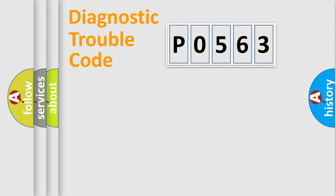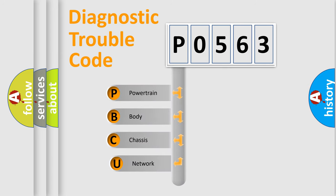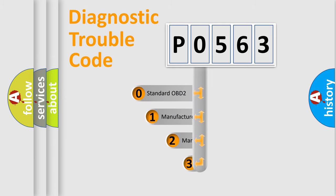First, let's look at the history of diagnostic fault code composition according to the OBD2 protocol, which is unified for all automakers since 2000. We divide the electric system of an automobile into four basic units: Powertrain, Body, Chassis, and Network. This distribution is defined in the first character of the code.